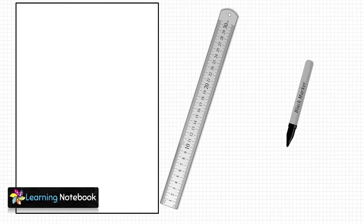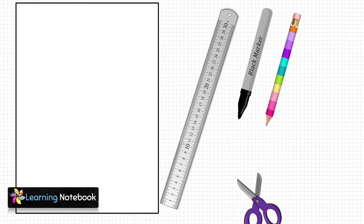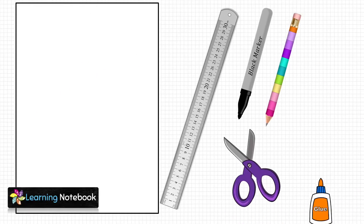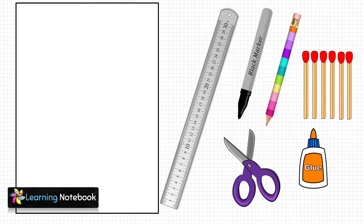For this activity we need one white A3 sheet, a ruler, a black marker pen, a pencil, a pair of scissors, a matchbox, and a bottle of glue.